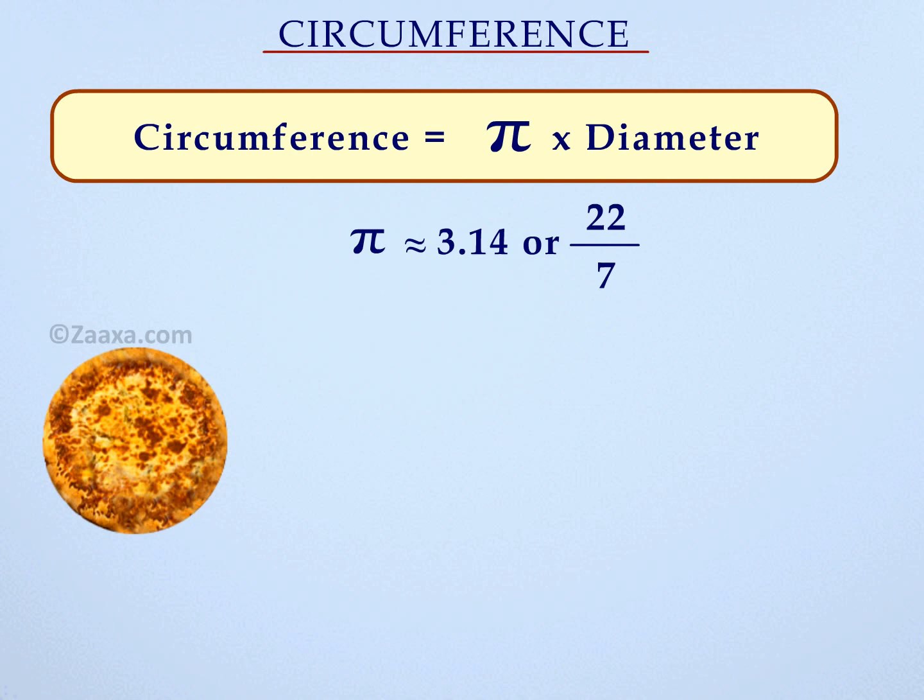Let us find the circumference of a pizza whose radius is 7 cm, taking the value of pi as 22 over 7.